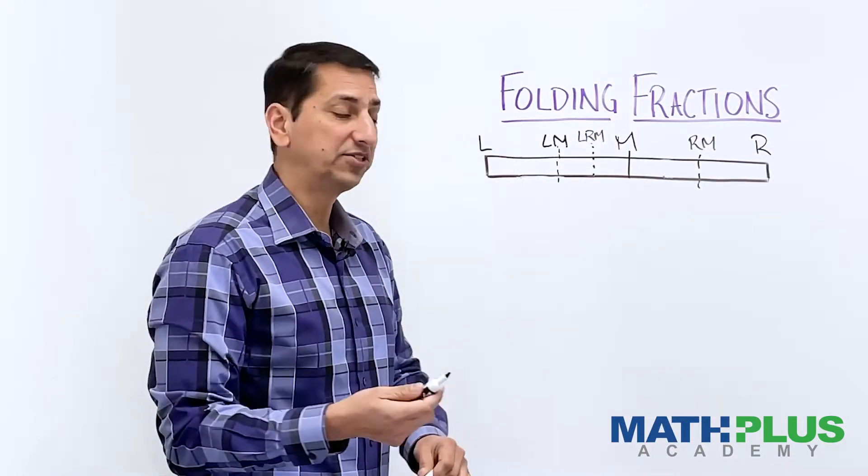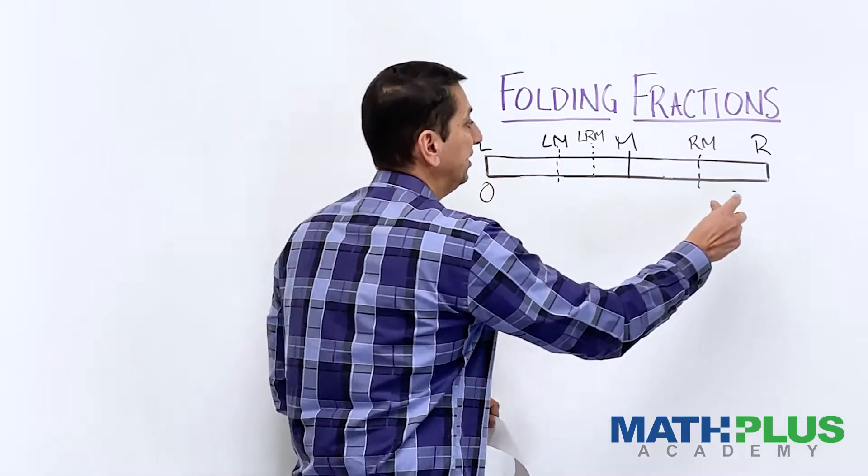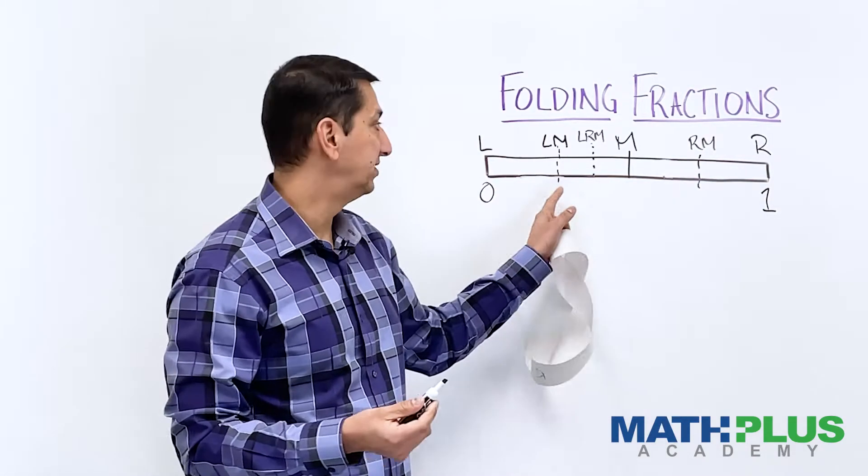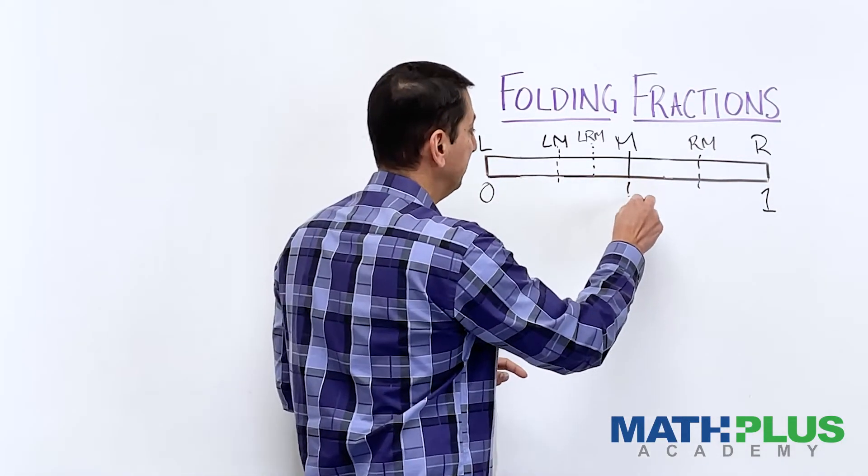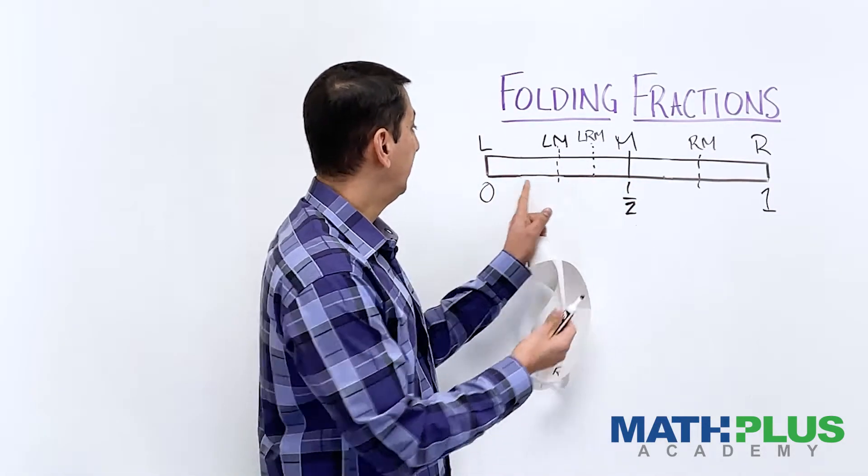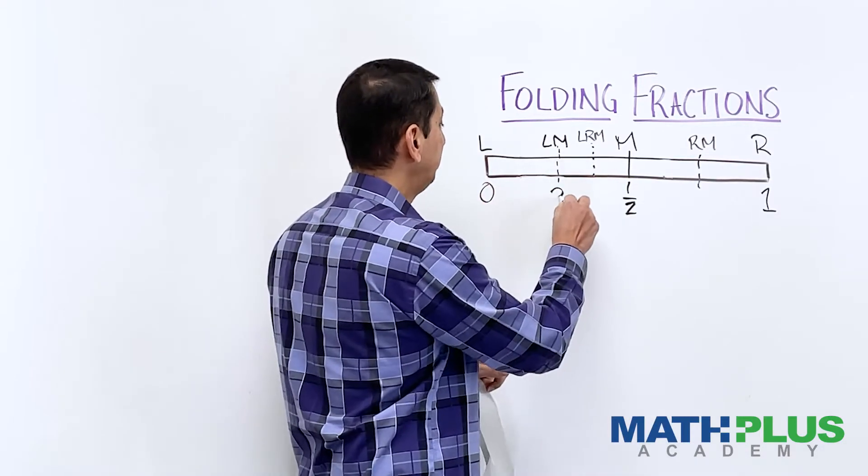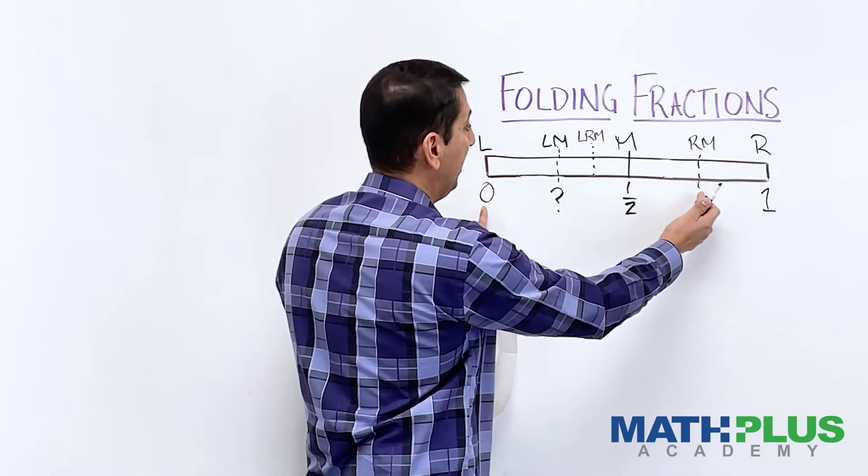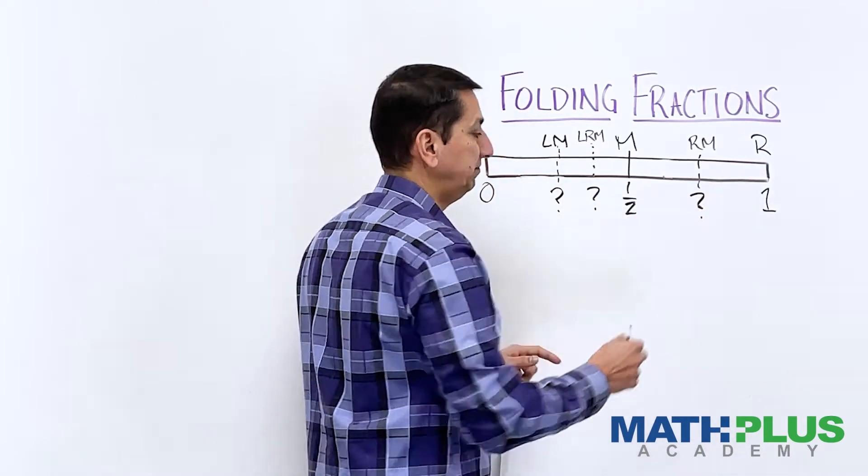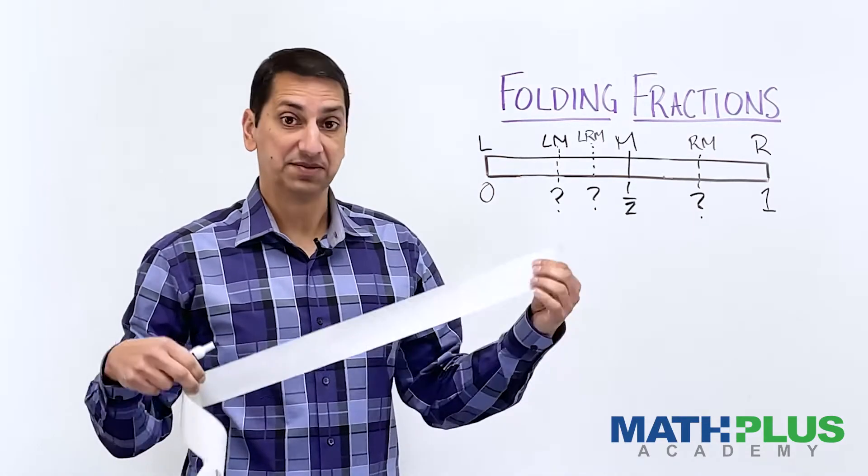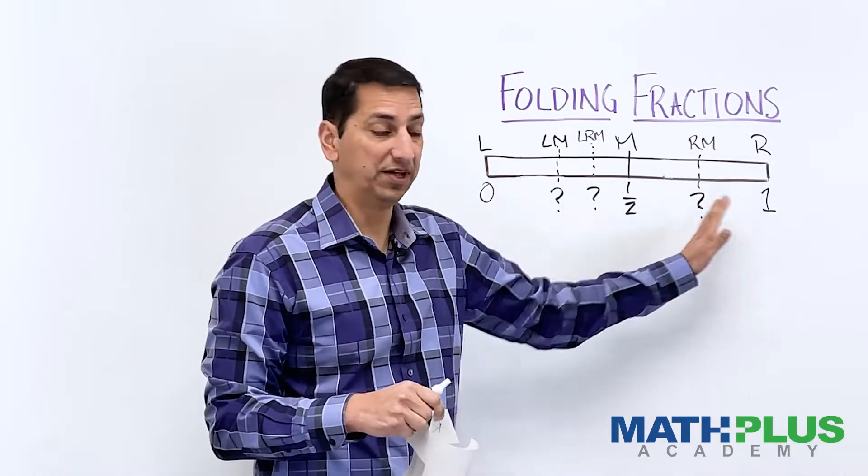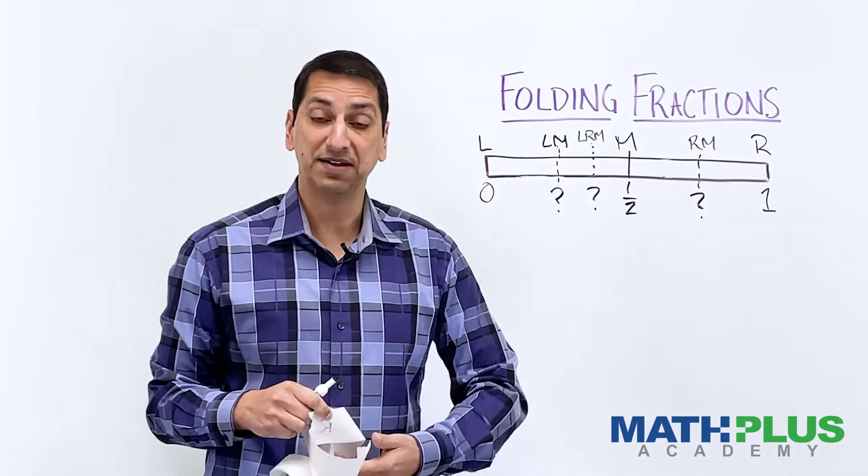And then if we started thinking about fractions, maybe we would label this end zero and this end one and think about, well, what fractions are these that we're creasing and folding? So of course, this is the middle. That's one half. I think we can agree on that. But when I folded L over to M and split this in half, what was this fraction? When I folded this over to there, what's this fraction? When I folded this over to here, what's that fraction? So that's one of your challenges: make some folds and start thinking about what are the fractions, if I label this zero and this one, that I'm creating as I make these folds.